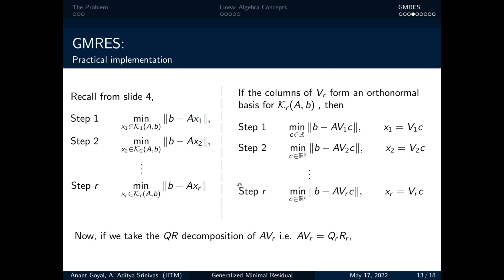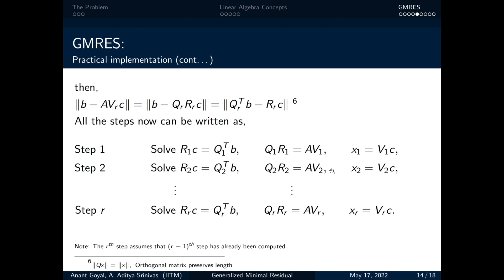Now, for solving, we take the QR decomposition of AVᵣ as QᵣRᵣ and put it back on the right hand side steps. Doing so, we get a new set of steps as shown. Here we solve the triangular system by back substitution to get C followed by our unknowns X. Now, we will look at our implementation.